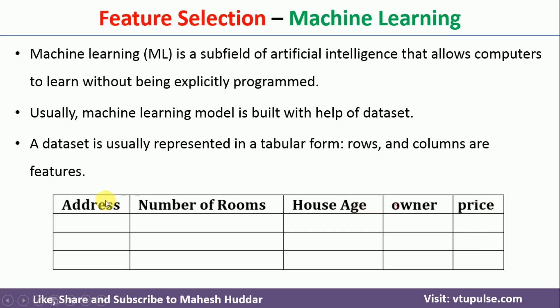The features are address, number of rooms, house age, and owner. Given these particular features, we want to predict what is the price of that particular house.